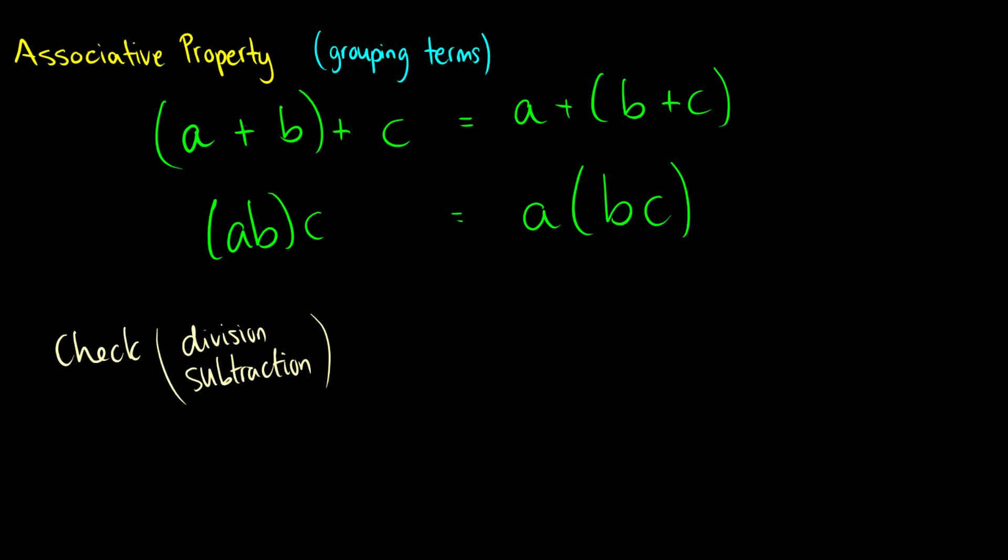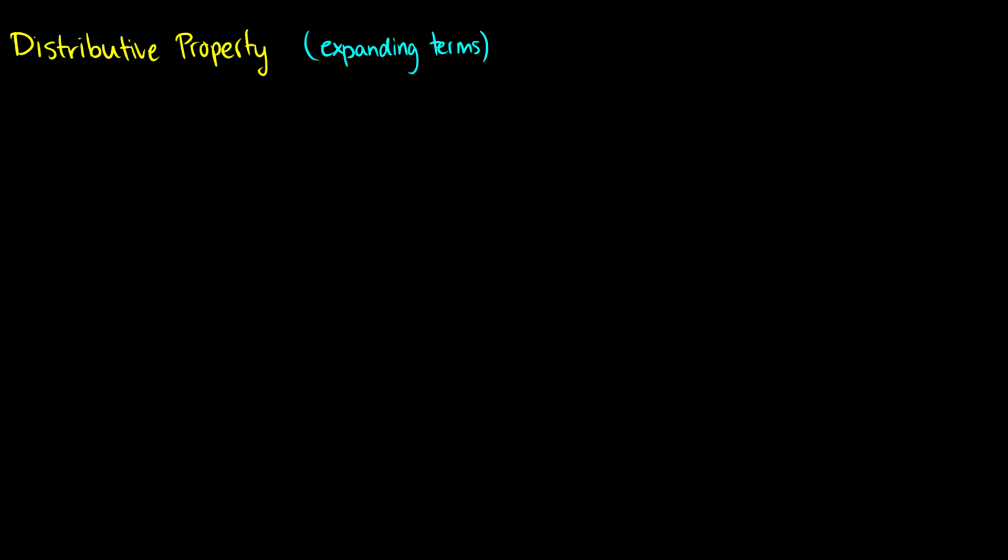Okay. And finally, the big one, which most of you are probably here for, is the distributive property. And this is expanding terms. So what happens when we have a addition and multiplication in the same problem? So for instance, we have a times b plus c. Well, what we do is we distribute the a in. So we distribute a to the b, and we distribute a to the c. So what we get is ab plus ac.